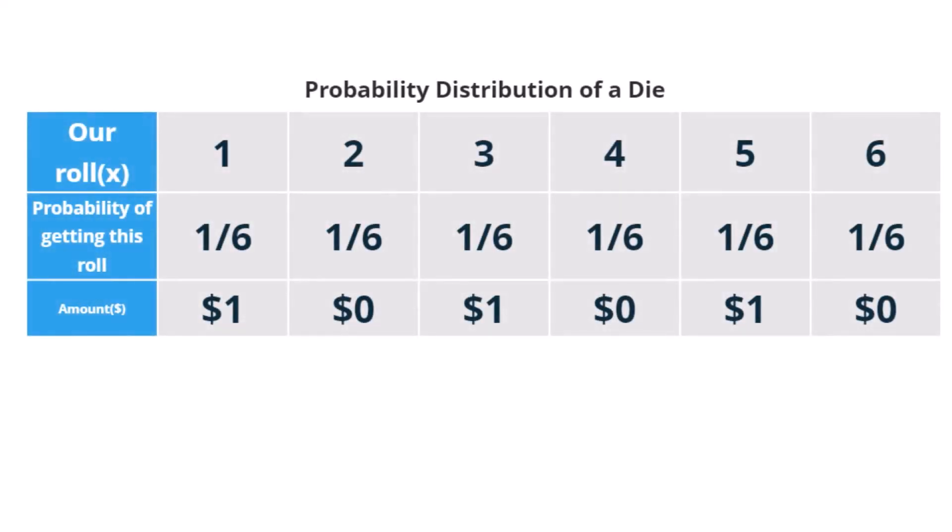Here's the probability distribution of a die. A roll could be anything, and the probability of getting that roll would still stay the same, 1/6. But the amount changes. From every odd number, we get a $1 gain, and on an even number, we get no gain or loss. As shown here, we can apply our formula and get 1/2 or 50 cents as our average return when we roll the die.